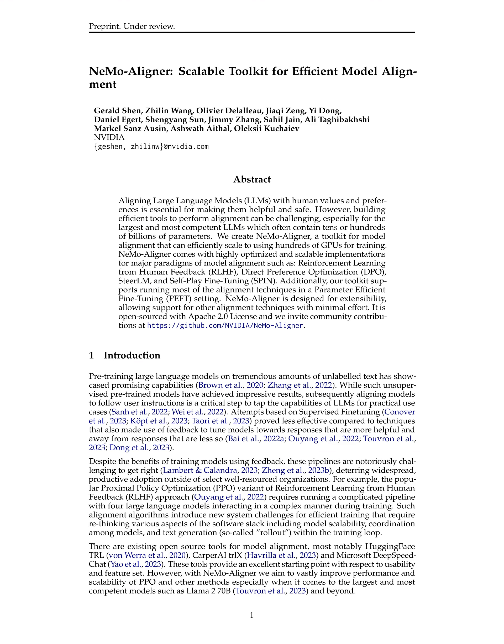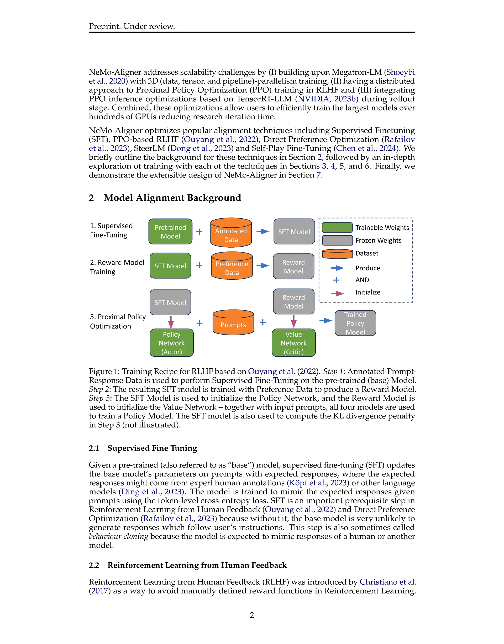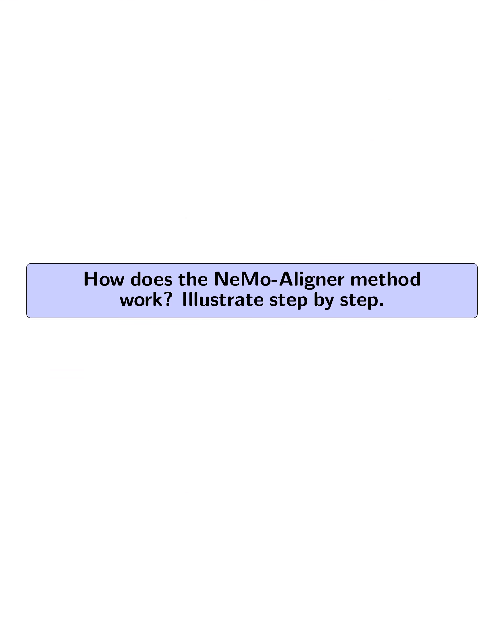It aims to improve the performance and scalability of PPO and other methods, particularly for the largest models like LLAMA-2 70B and beyond. NEMO Aligner incorporates optimizations such as 3D parallelism training, distributed PPO training, and PPO inference optimizations based on TensorRT-LLM during the rollout stage to efficiently train large models over hundreds of GPUs, reducing research iteration time.